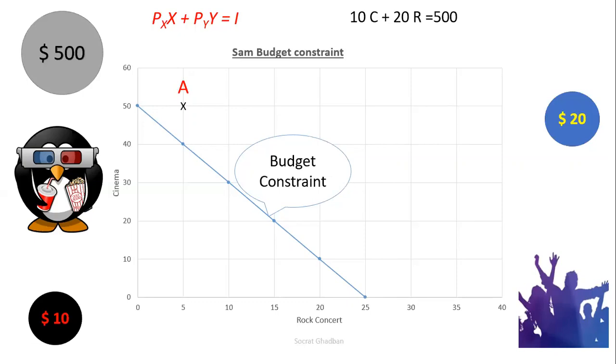On point A, we have 50 times or 50 tickets to go to the cinema and 5 tickets to go to the rock concert. So if we consider the budget for Sam, it's 500. If he goes 50 times to the cinema, it's 50 times 10, it's 500. So he won't be able to go to the rock concert. So this point A is not achievable given the budget for Sam. This is why it goes beyond the budget constraint.